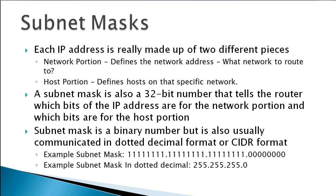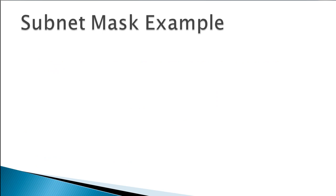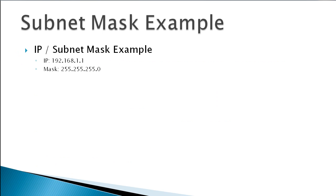A subnet mask is also a 32-bit binary number, but we also usually use dotted decimal notation. For example, this subnet mask comes out to 255.255.255.0 in dotted decimal format. That mask tells our router which bits of the IP address are for the network and which are for the host. For example, let's say we were given the IP 192.168.1.1 and a mask of 255.255.255.0.